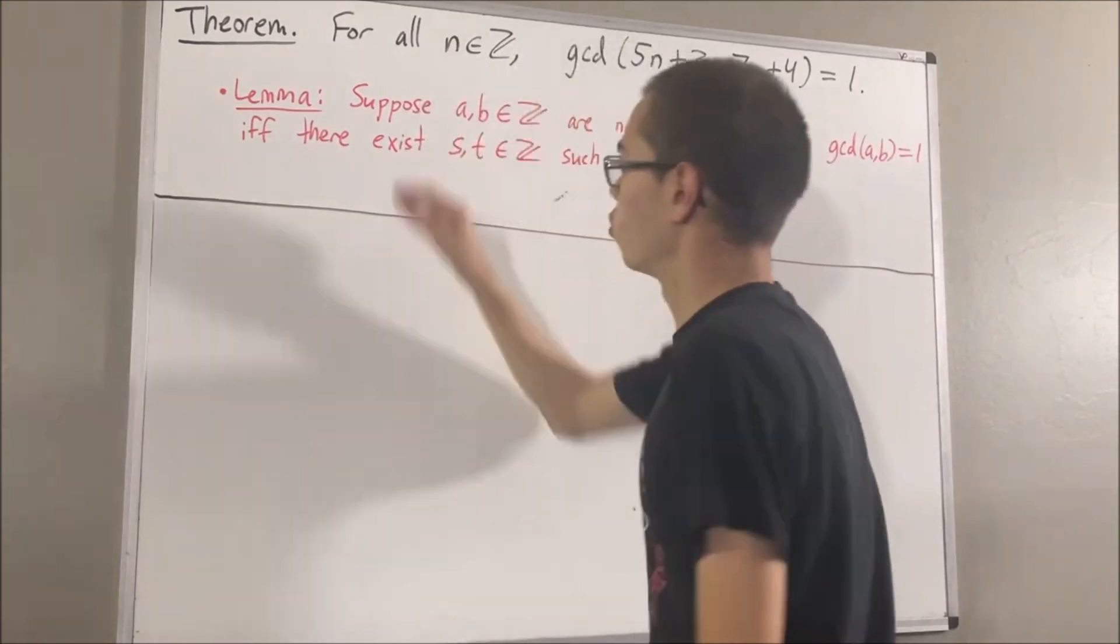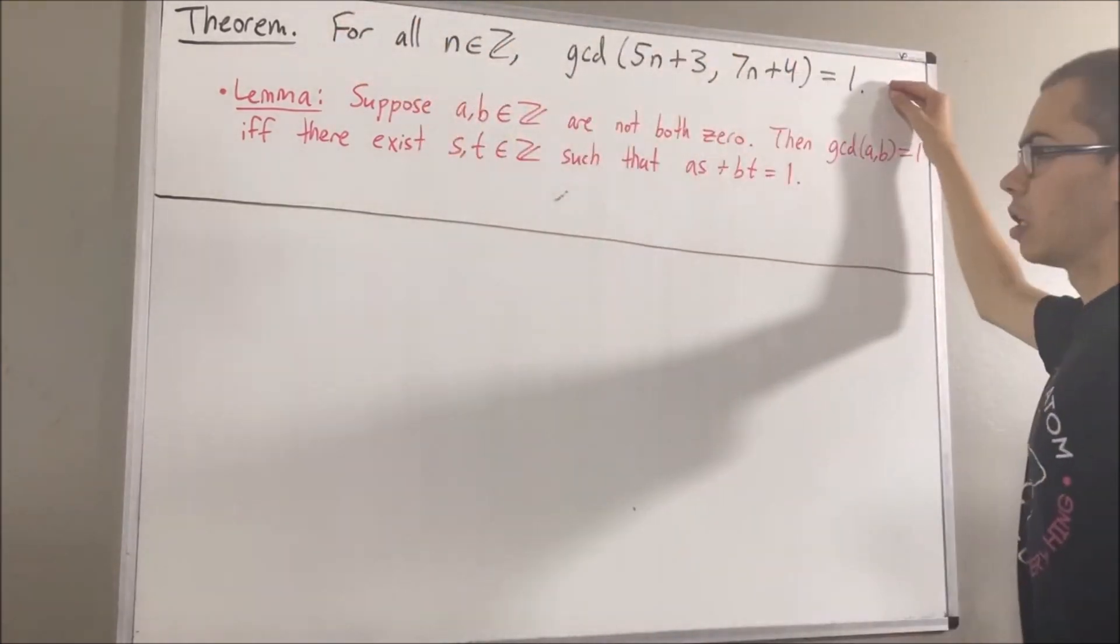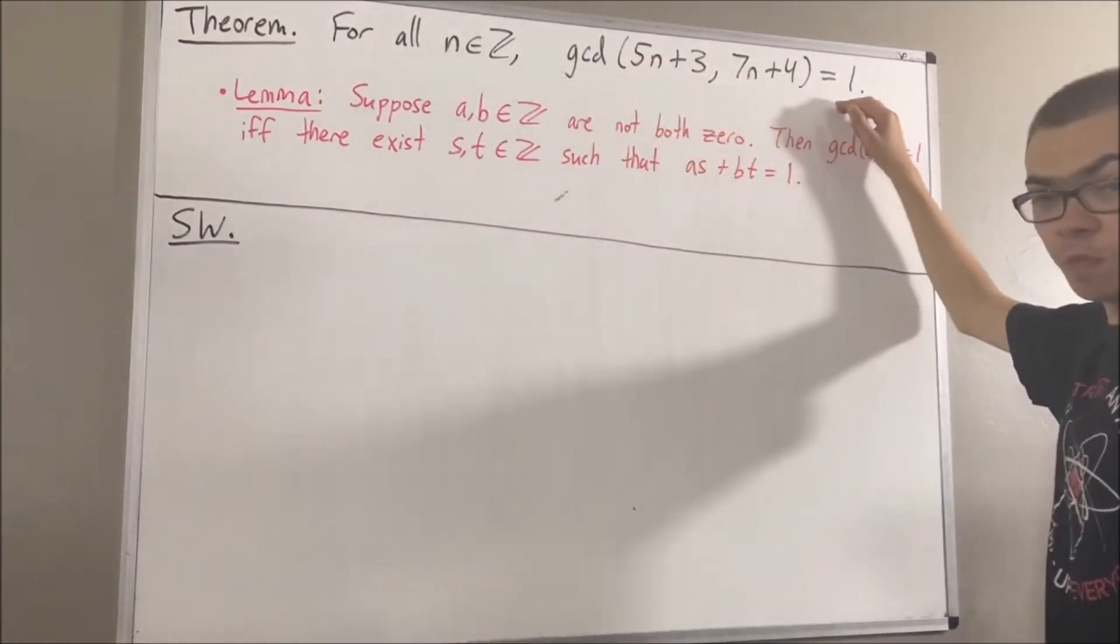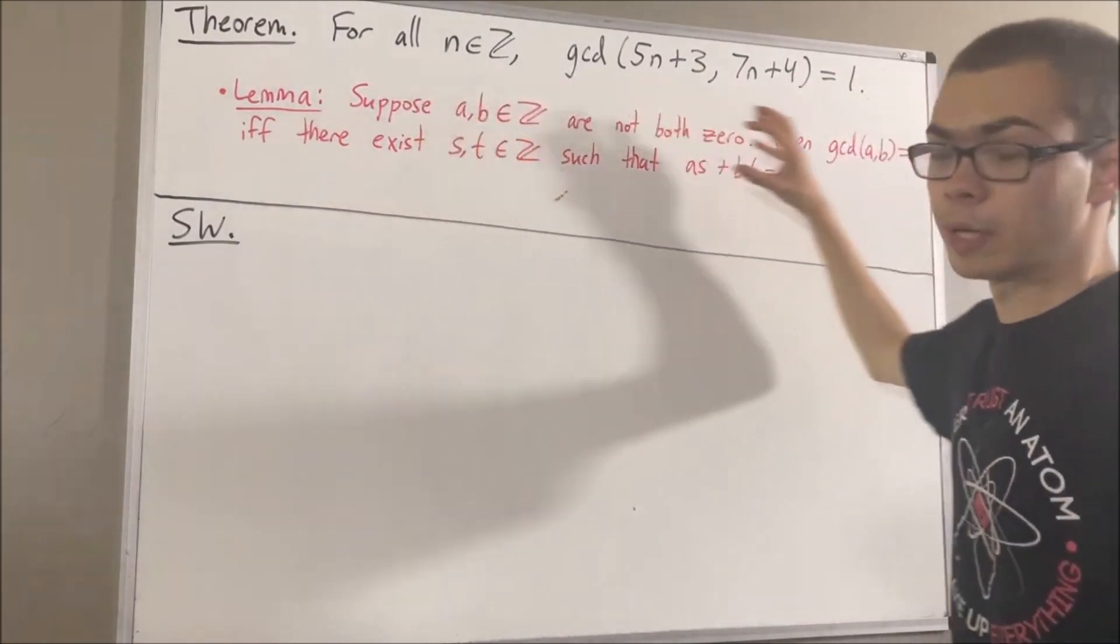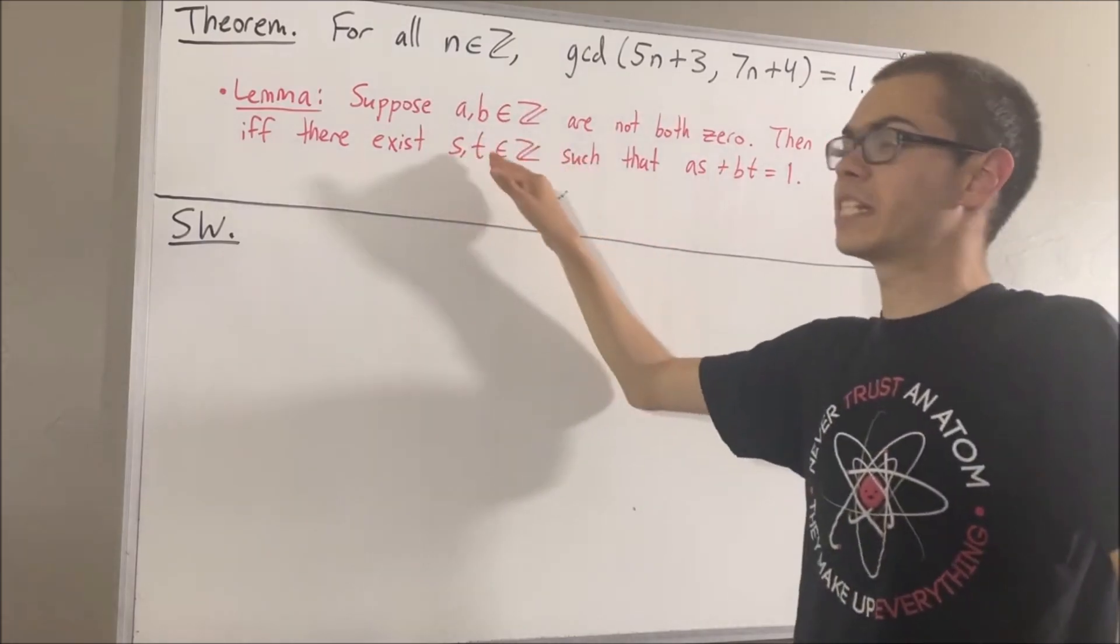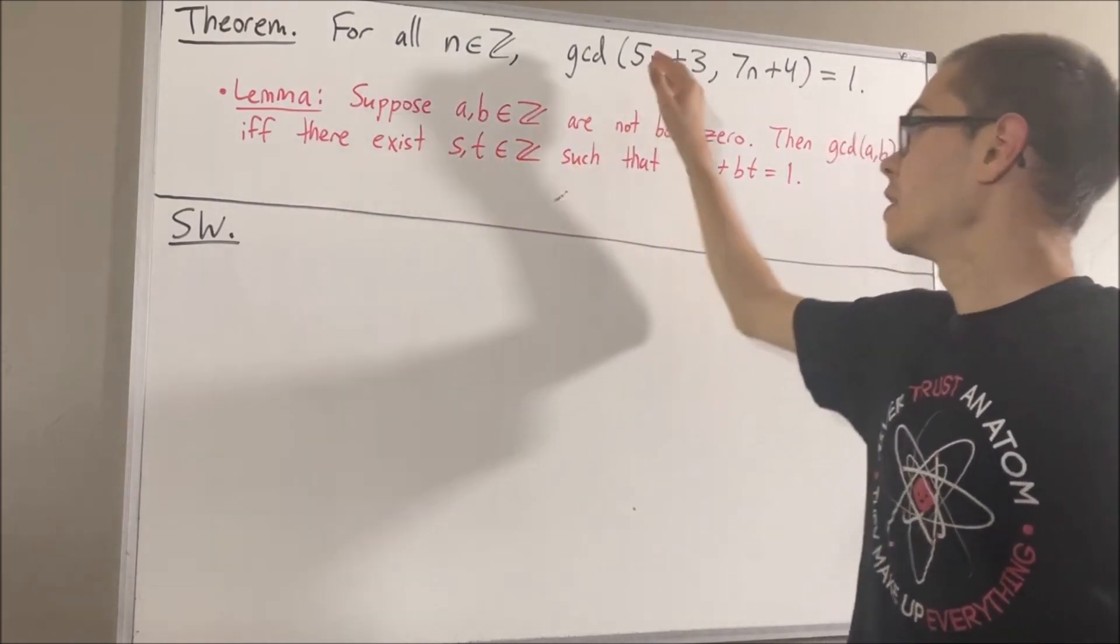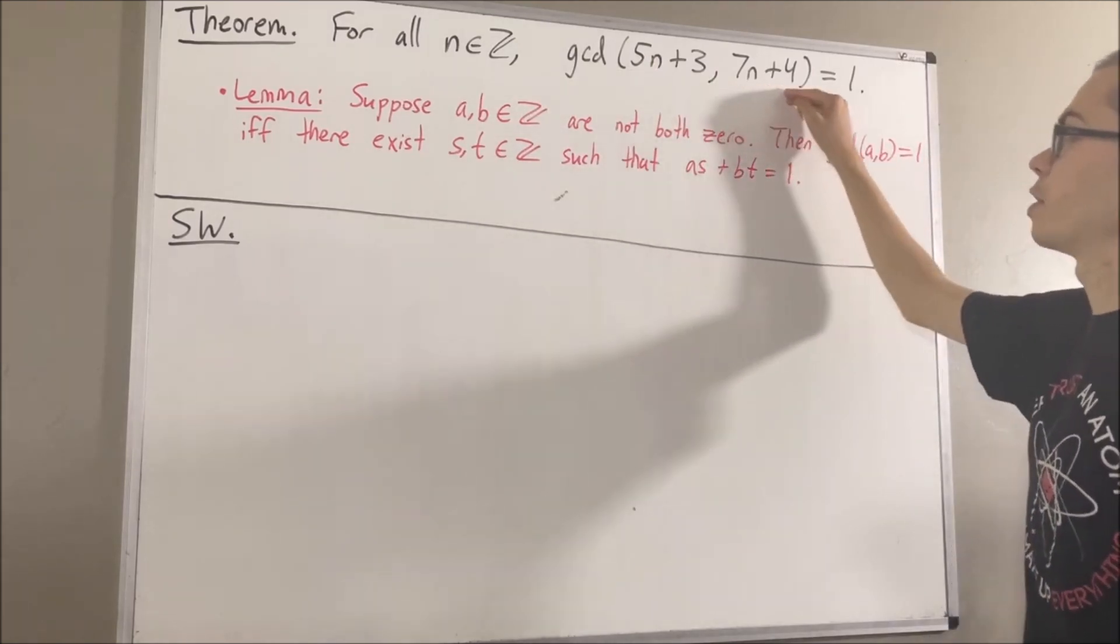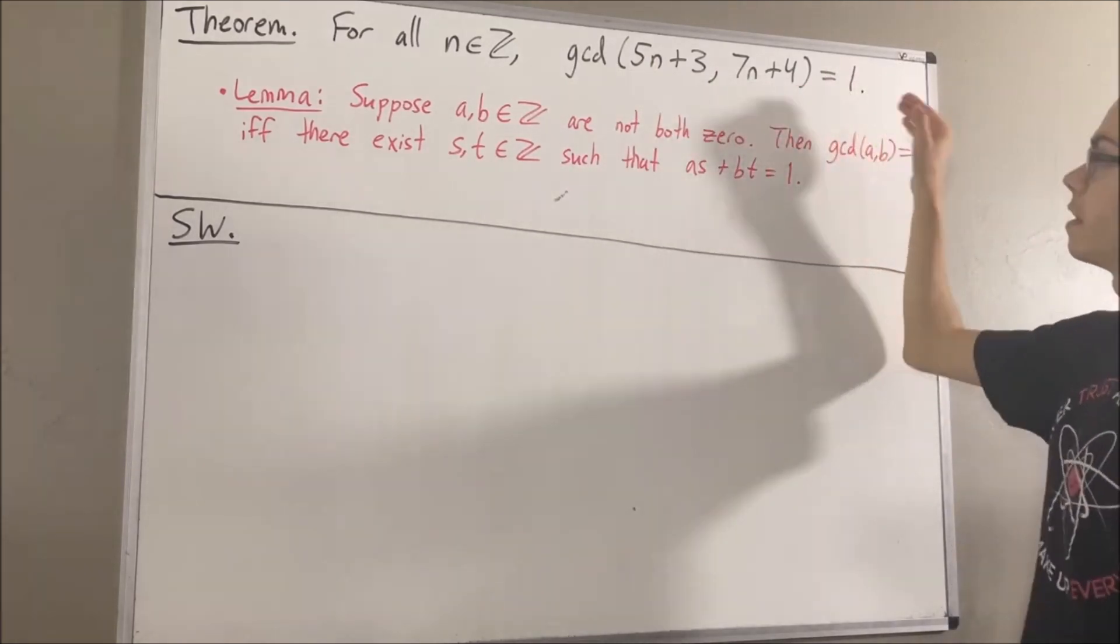Now, before we get into proving this theorem, let's start out with some scratch work. So, to show that this is true, we could try applying our lemma, which means we want to find integers s and t such that 5n plus 3 times s plus 7n plus 4 times t is equal to 1.